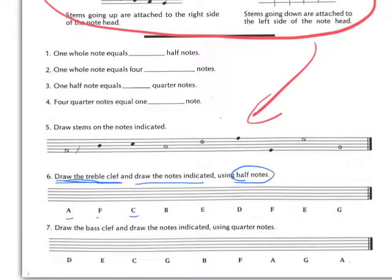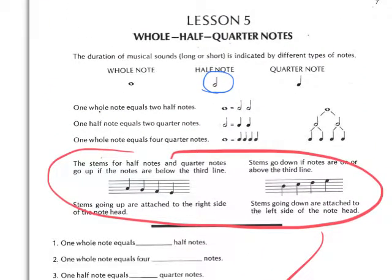Number seven. It says draw the bass clef, make sure you draw your bass clef, and draw the notes indicated. So again, using the bass clef now, you'll draw D, E, C, etc. Make sure you use quarter notes. What are quarter notes? Let's look at the top of the page. Quarter notes look like this.